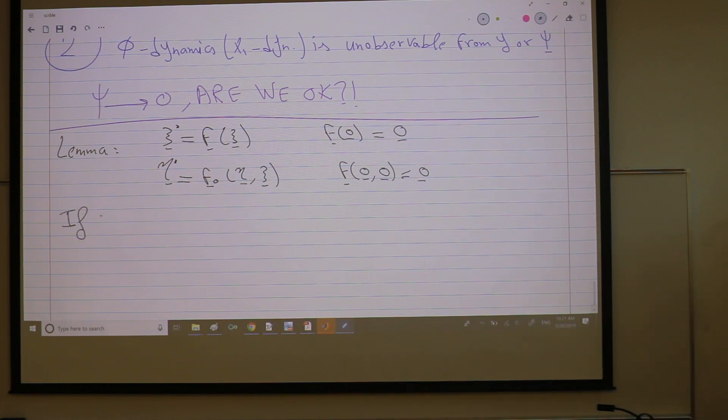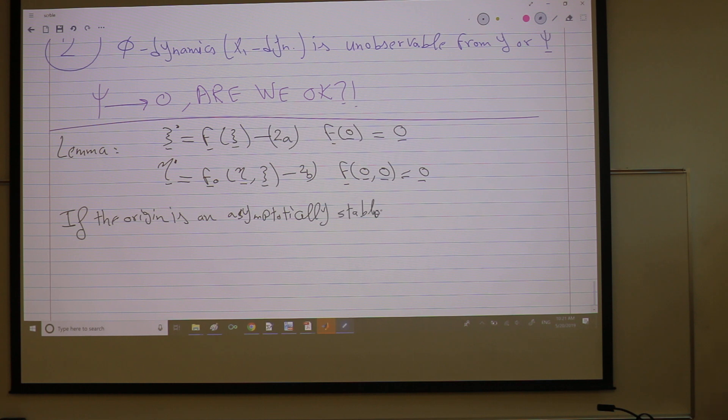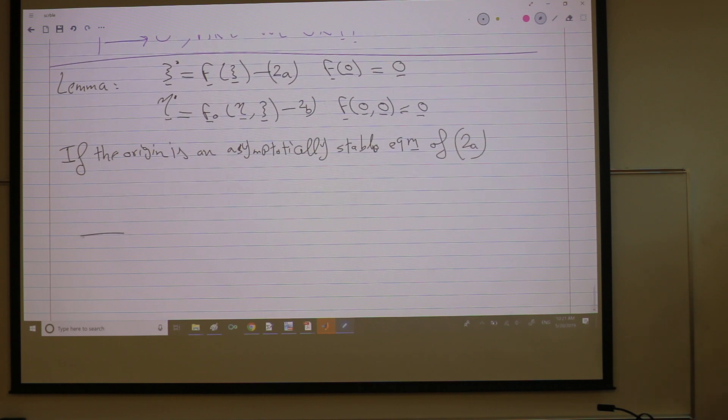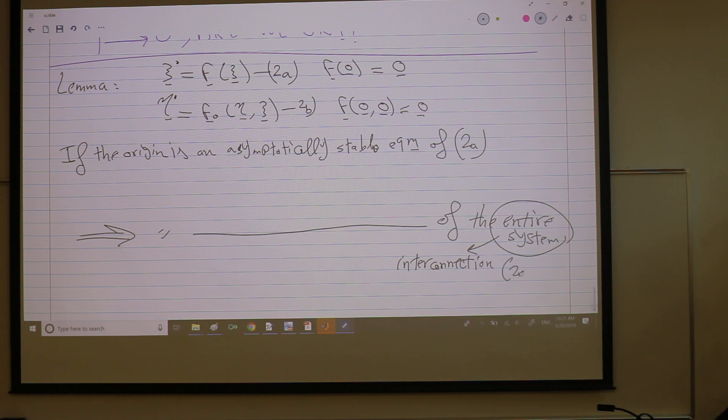So I want something like if the origin, let's give them names, like this is 2a and 2b for example. If the origin is an asymptotically stable equilibrium point, equilibrium point of 2a. If I ensure stability for the first guy, I hope to get stability from the entire system. The origin is asymptotically stable equilibrium of the entire system. Which in formal language we call it the interconnection. Interconnection or interconnected system, by which we mean both 2a and 2b.